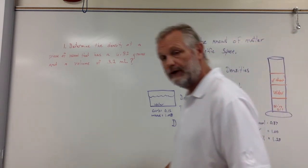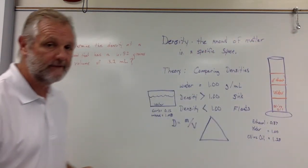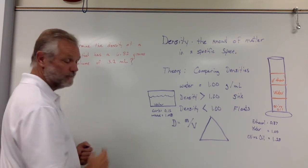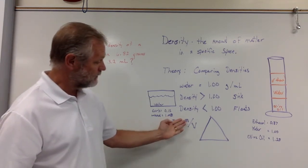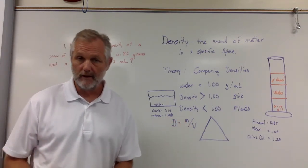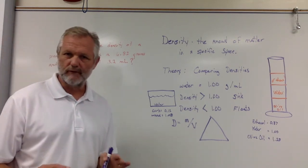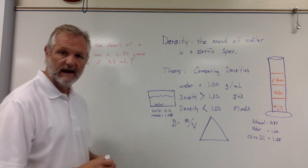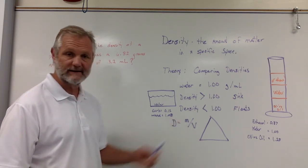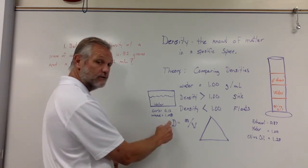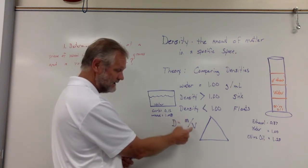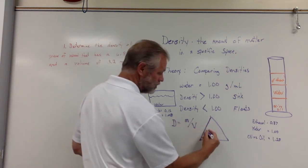Now whenever we're doing density, we have to know the formula for density. Density is equal to mass divided by volume. Now one of the things that I always teach, and it just helps prevent basic algebra mistakes, is if you have a formula that has three variables like this one - density, mass, and volume - then you draw the little triangle.